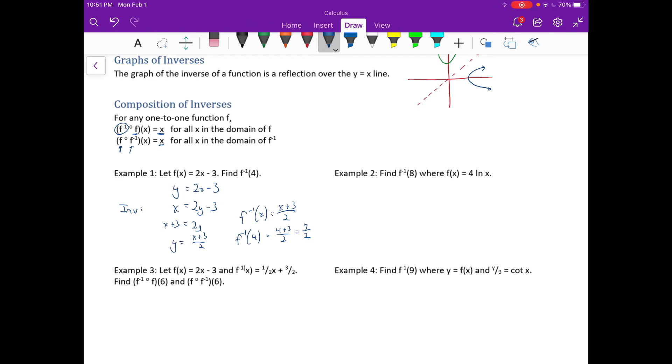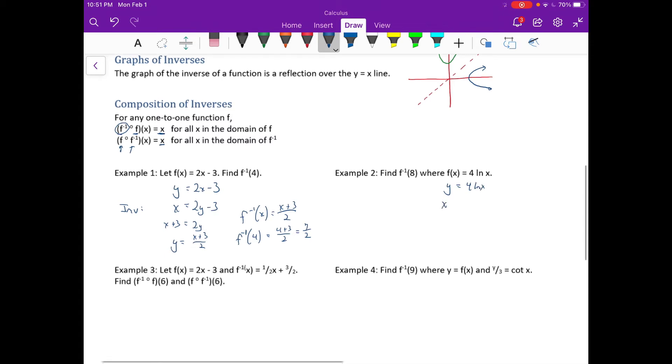This one says find the inverse of 8 where the function is 4 natural log of x. So in order to do that, first we will write this as y equals 4 natural log of x. We'll switch x and y. So this will be our inverse. Switch x and y for natural log of y.